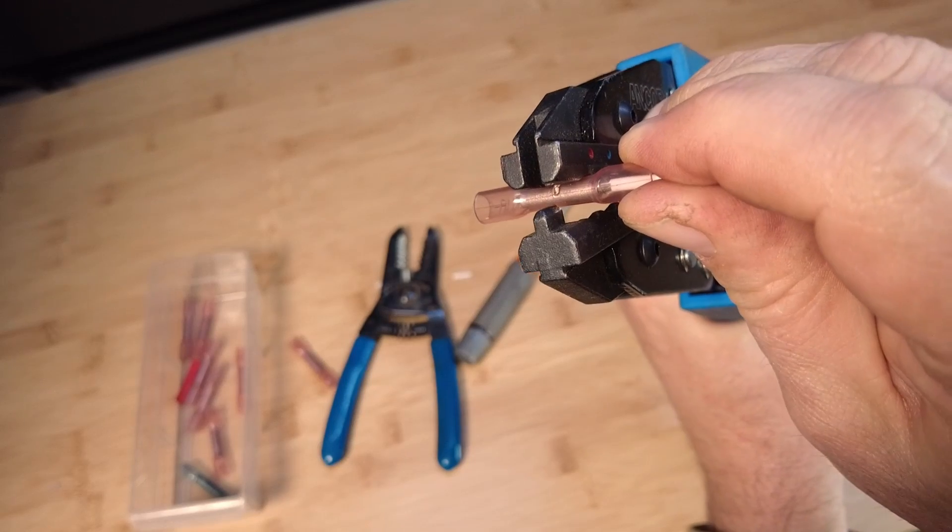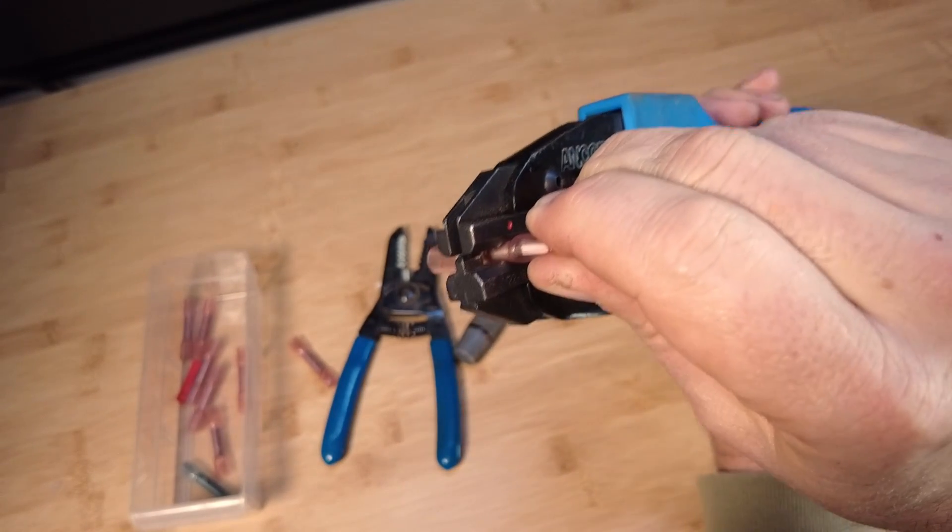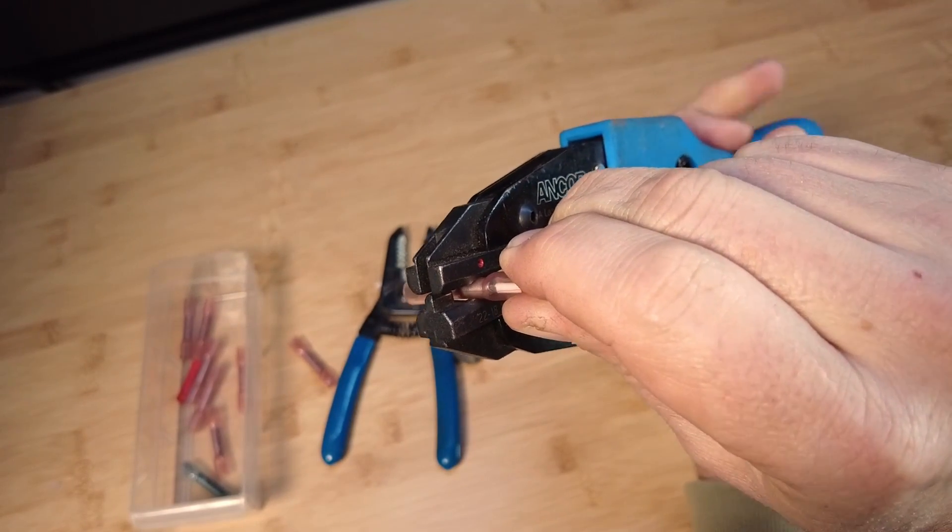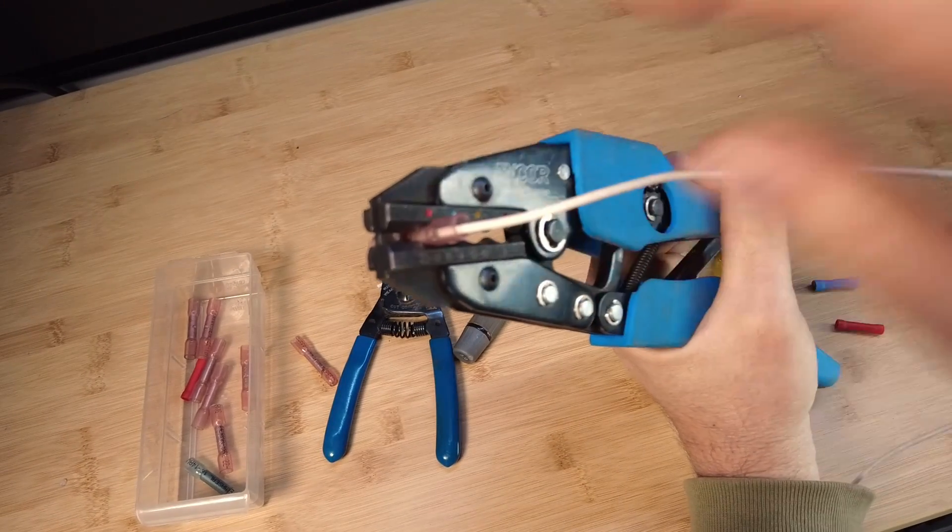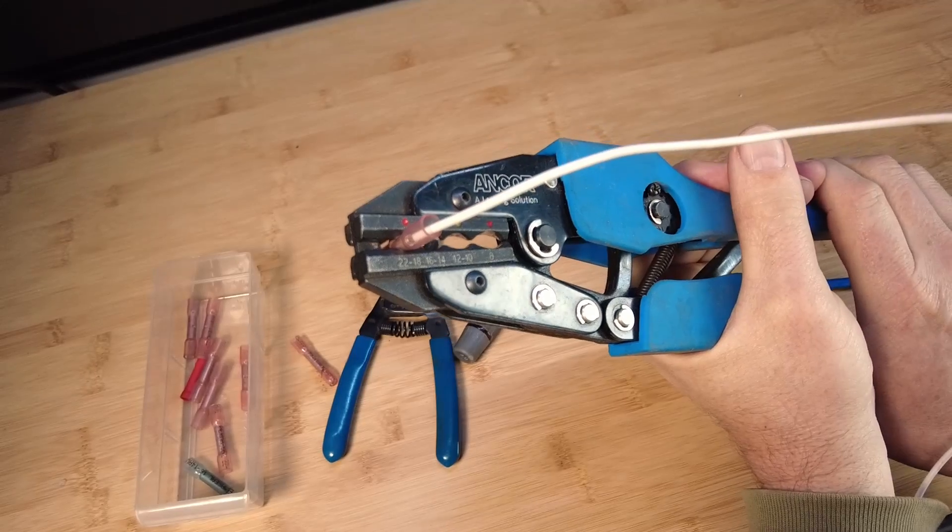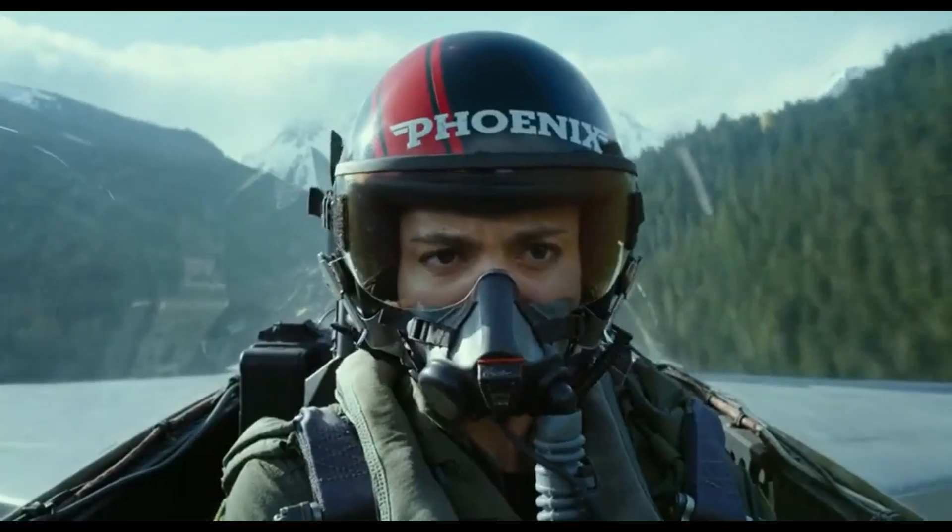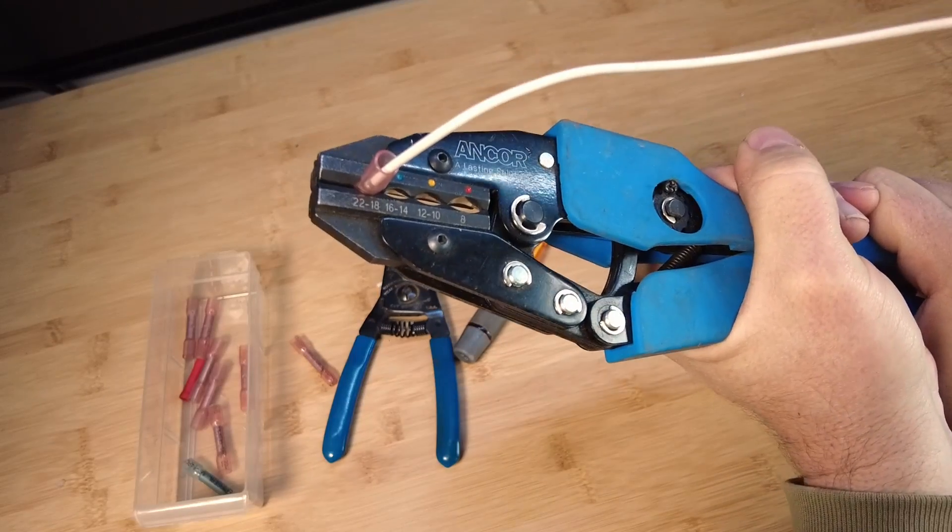So here we are putting the red crimp into the red connector. Key is to make sure the wire doesn't fall out at this point, because once you crimp this, that crimp is, you can't go back. We can't go back. So I'm crimping it all the way closed.